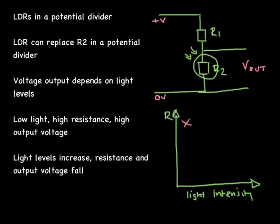But we want these security lights to switch off automatically when it gets light. So as the light levels increase the resistance and the output voltage falls, just like in the graph. As the output voltage falls it gets to a level where the security light circuit will switch off and the lights will go out.